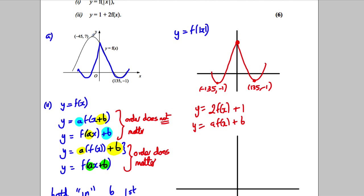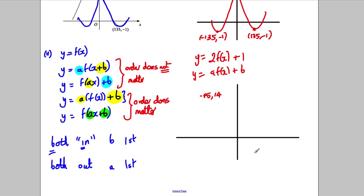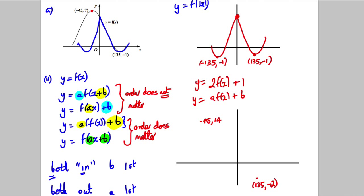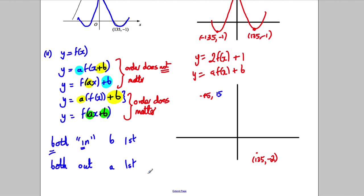So stretch by 2 units: this point here would now be (-45, 14), and this point would be (135, -2). What I would do then is add 1 unit. If I add 1 unit in that direction, it would clearly be 15. And if I add 1 unit in that direction, it would be -1, so these points become (-45, 15) and (135, -1).